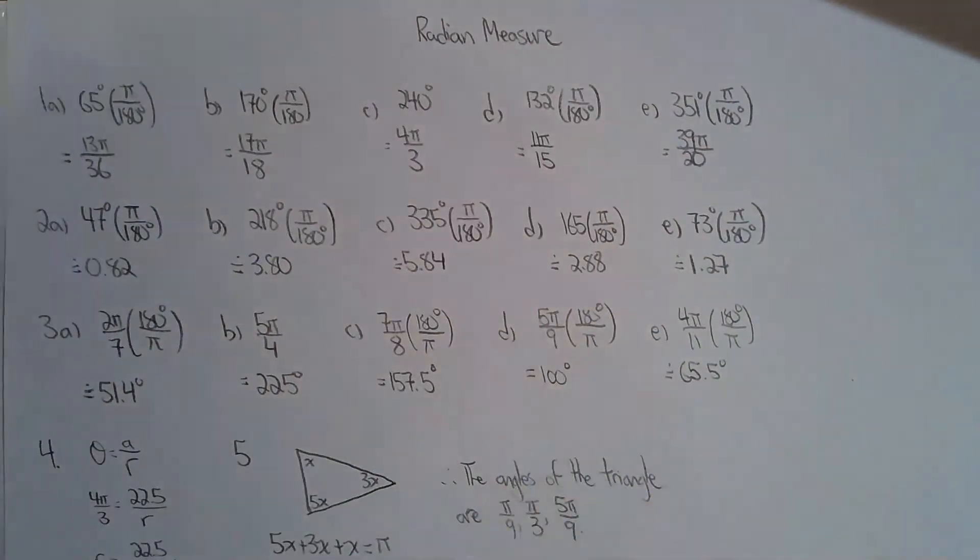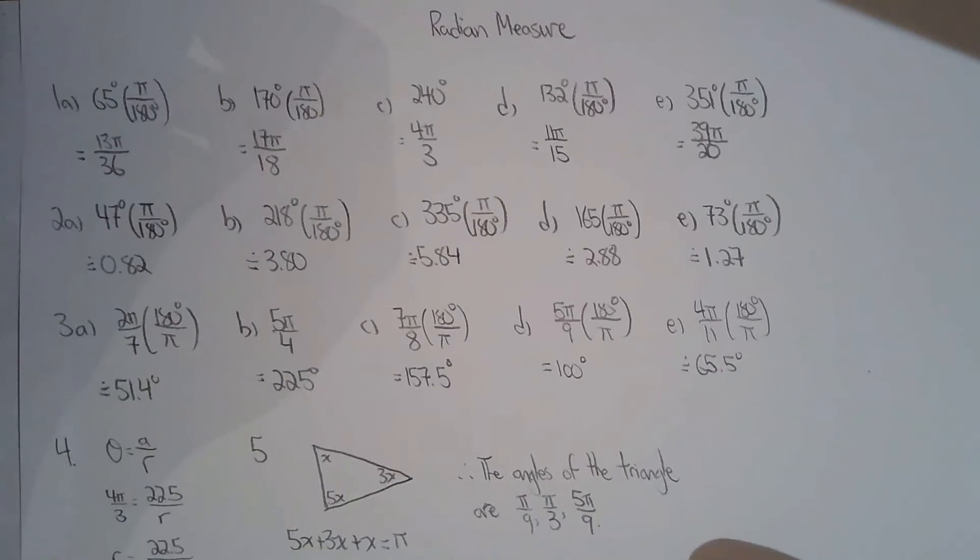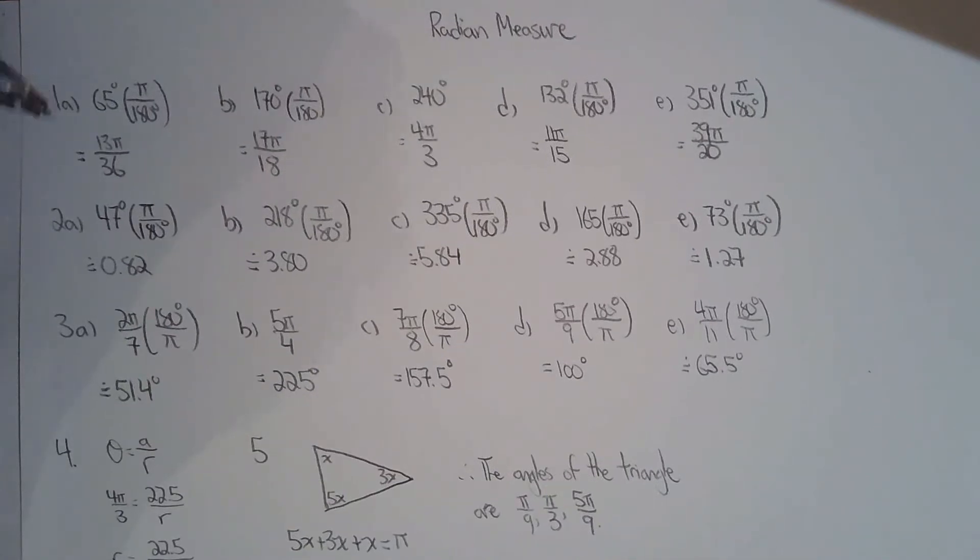The first question is telling us to find the angle in radians given the angle in degrees. All you have to know is how to convert from degrees to radians, and the conversion factor is pi radians is equivalent to 180 degrees, and we did the proof in our lesson.